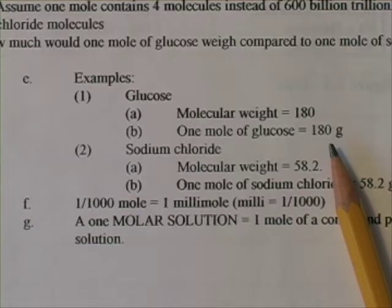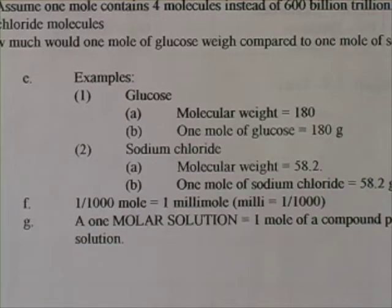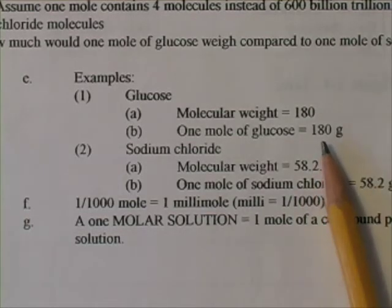So if you're in a laboratory, what you do is get your scales out and a weighing pan and a jar of glucose and pour it into the scale and weigh out 180 grams. You now have a mole.